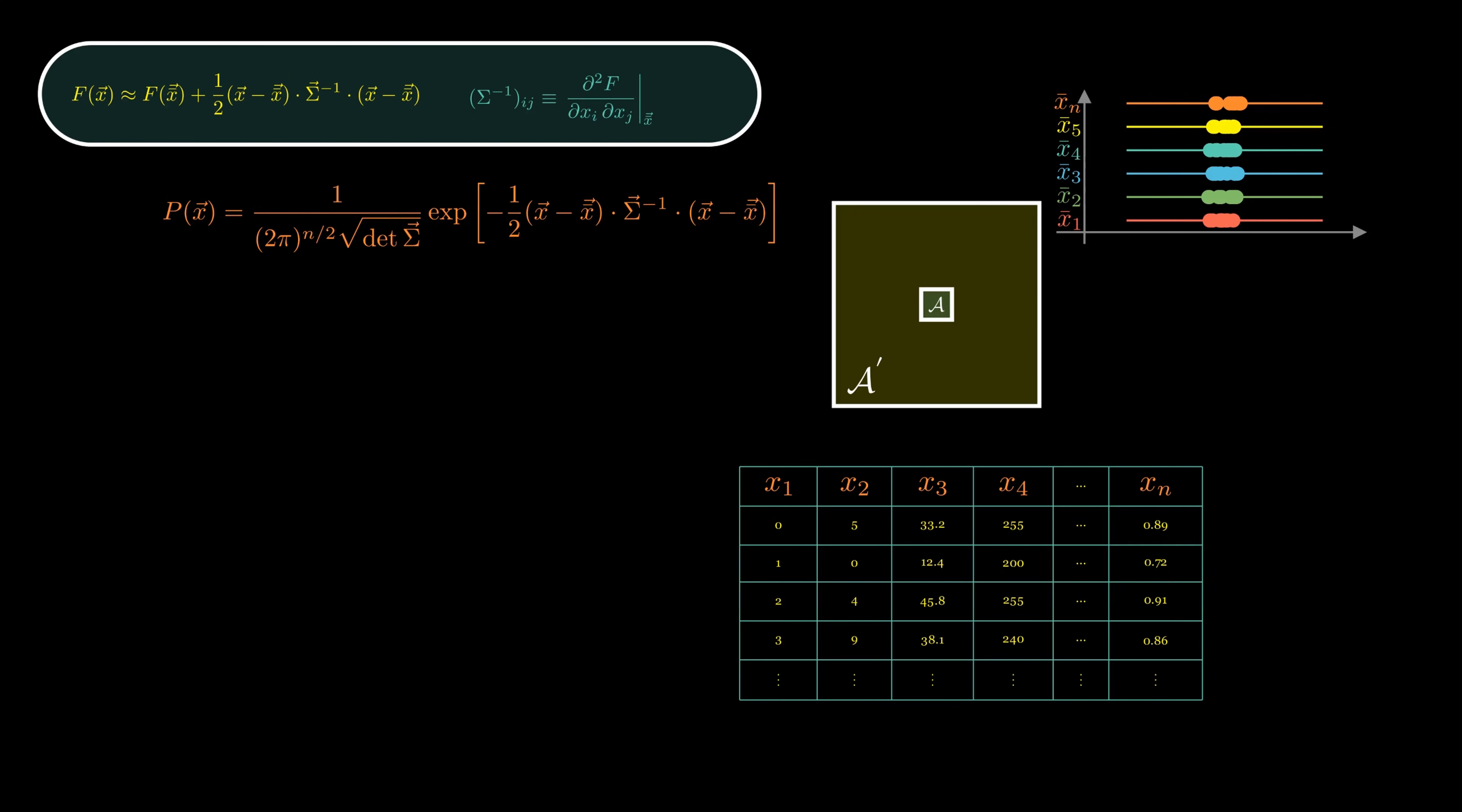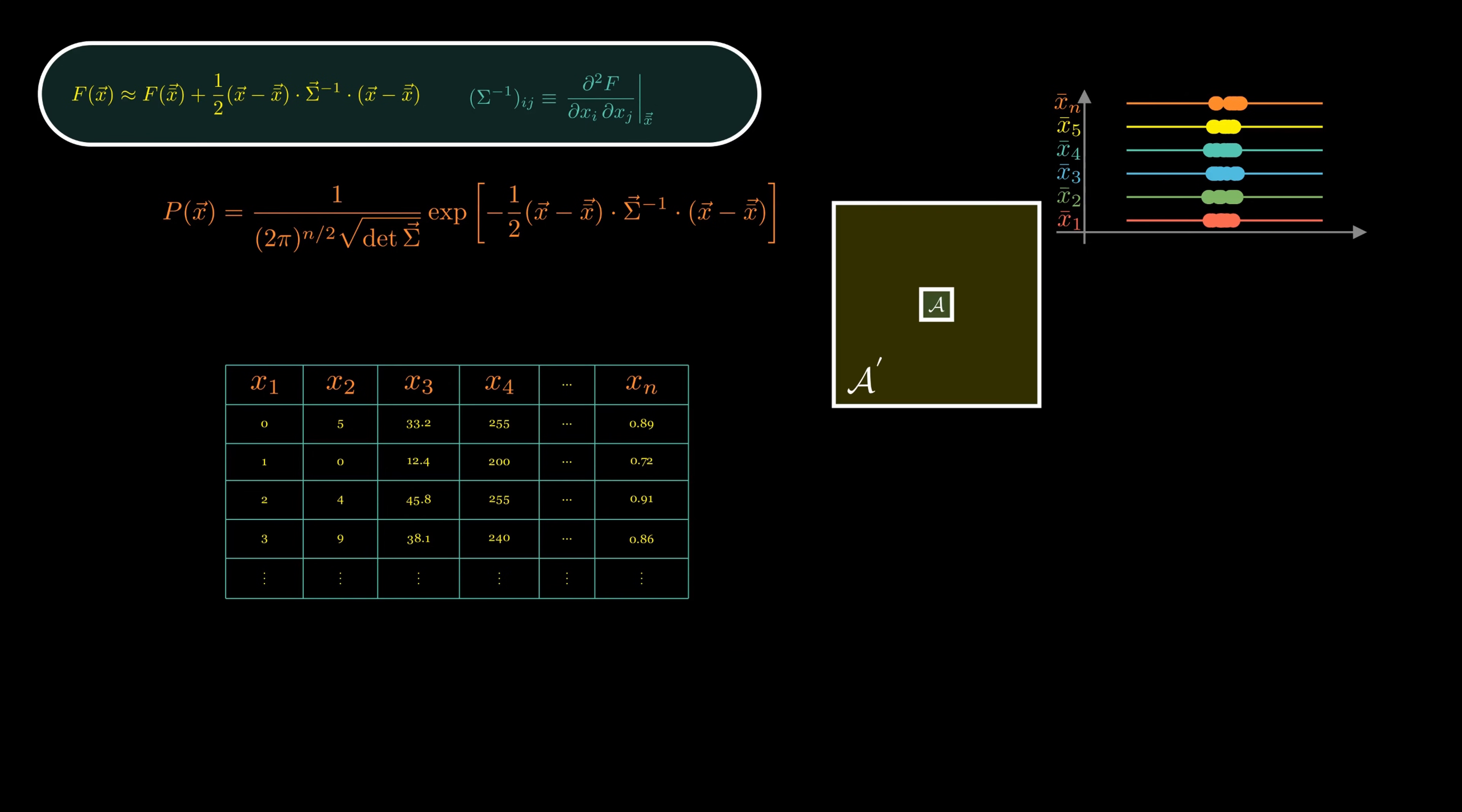this form of the probability function is called the multivariate Gaussian distribution, a cornerstone of statistical modeling. In machine learning, especially in supervised learning, we're often interested in predicting one of the variables, let's say Y, using the rest, which we denote as X. That means we split the full set of variables like this.